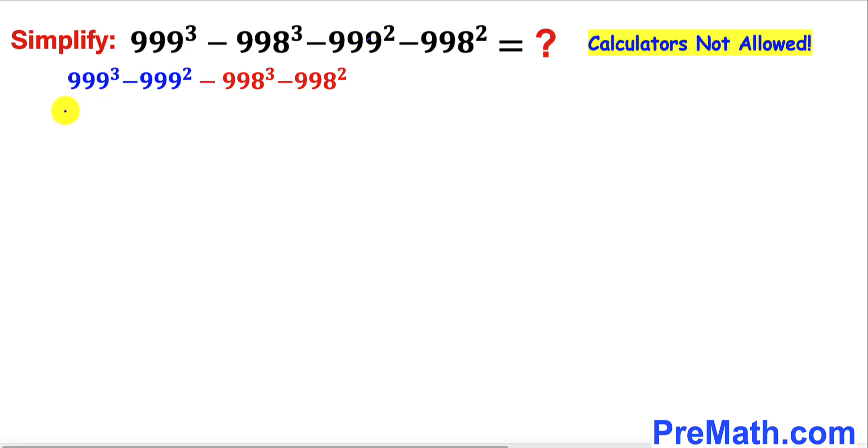Therefore I'm going to factor out 999² over here and we end up with 999 - 1. And likewise I am going to factor out 998² outside.